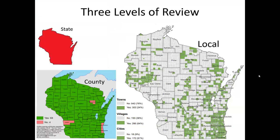There are actually three different levels of review. Unlike zoning, where you can have town zoning, county zoning, or municipal zoning, there can actually be overlapping levels of subdivision review. So there's state level review, and the majority of counties exercise subdivision review.